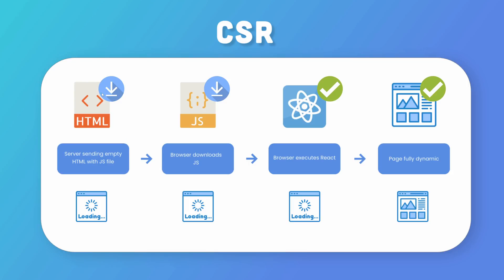When you load up a client-side rendered app, what happens is when you go to the browser, hit the link, and press enter, the server sends back an empty HTML file with a bundle.js attached to it — a JavaScript file attached to it. So initially we're going to see a blank page on our screen. The browser then starts downloading our JavaScript file; we still don't see anything. Once that JavaScript file is downloaded, the browser starts executing the code — our React code — which essentially starts mounting together the components and rendering them out. And once that's done, we have a fully dynamic page.